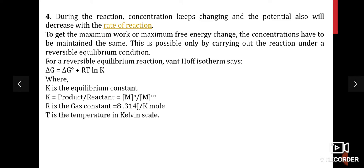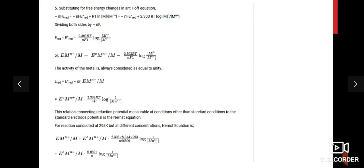During the reaction, concentration keeps changing and the potential also decreases as the reaction proceeds. To get maximum work, the concentration must be maintained constant, which is possible only under reversible equilibrium conditions. For a reversible equilibrium reaction, Van't Hoff's isotherm states: ΔG = ΔG° + RT ln K, where K is the equilibrium constant. Substituting and deriving, we get the final Nernst equation: E(M^n+/M) = E° − (0.0591/n) × log(1/[M^n+]). Please pause the video and review this derivation, which you have already studied in intermediate.